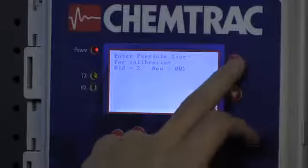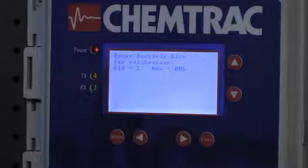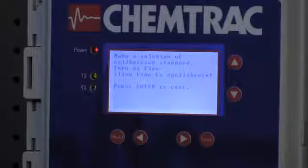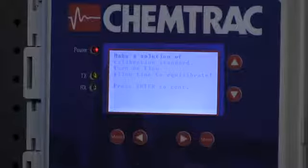And now, we're going to tell it, using the up arrow, change that to 5. So, we're telling the analyzer we're calibrating 5 micron. Hit enter. Make sure your flow rate is set for 75 milliliters per minute. And then hit enter to continue.